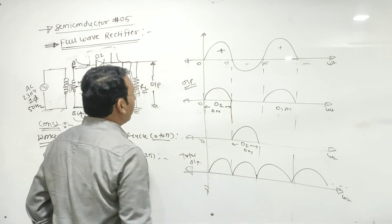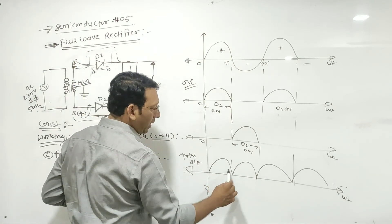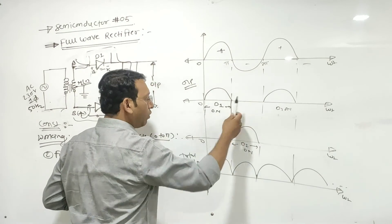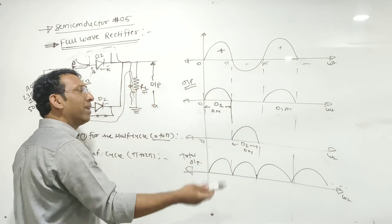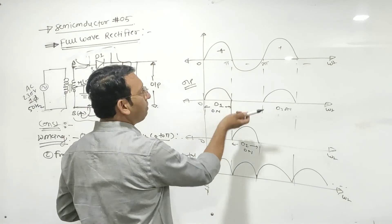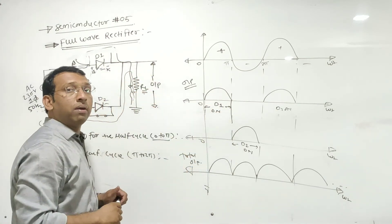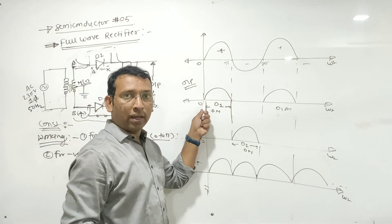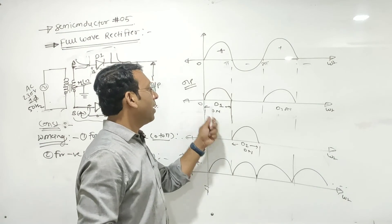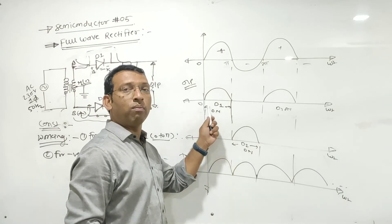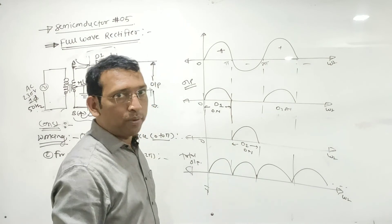Why is it called a full wave rectifier? If you observe, you are getting output for both the positive and negative cycles. In the last lecture, in half wave rectifier, the output appeared only for the positive half cycle, not for the negative. Here we are getting output for both cycles, and hence it is called a full wave rectifier.